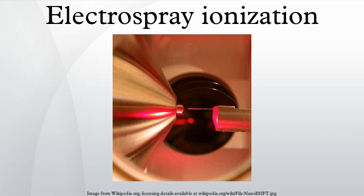The liquid containing the analyte of interest is dispersed by electrospray into a fine aerosol. Because the ion formation involves extensive solvent evaporation, the typical solvents for electrospray ionization are prepared by mixing water with volatile organic compounds. To decrease the initial droplet size, compounds that increase the conductivity are customarily added to the solution.